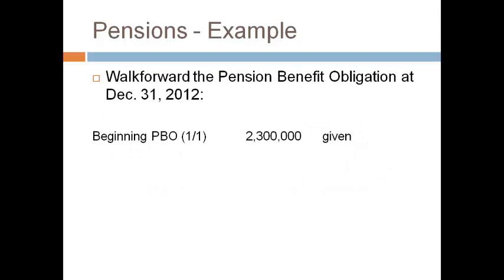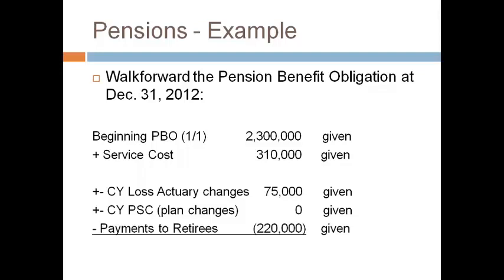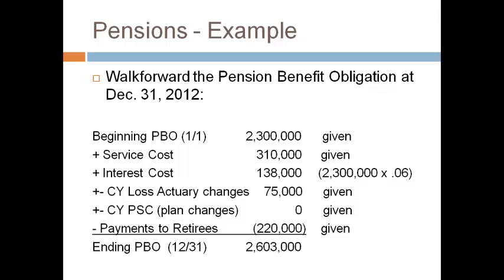The pension benefit obligation changes because employees work one more year, the actuary factors used to compute the obligation change, or the plan is changed. Payments to retirees reduce the obligation. In this example, the service cost is given. The interest cost is the beginning PBO multiplied by the discount rate. The loss from actuary changes means the company will have to pay retirees more and the obligation is increased.